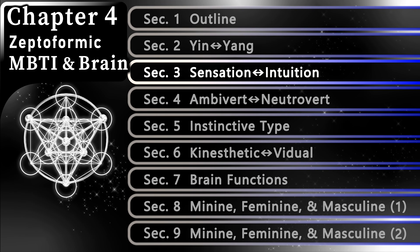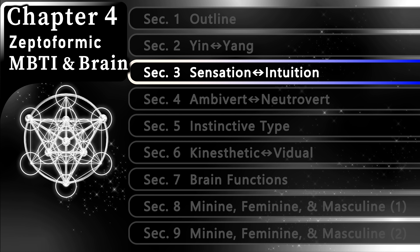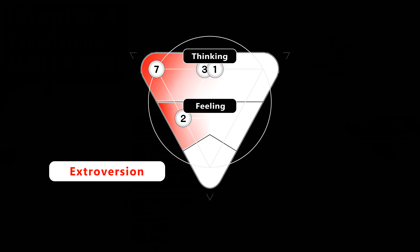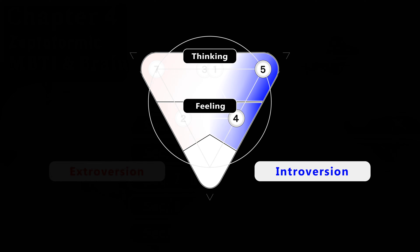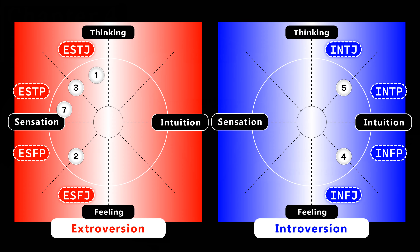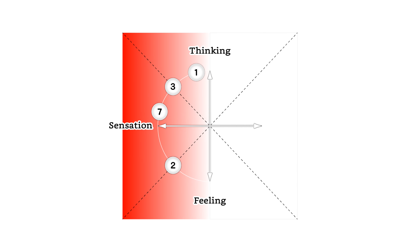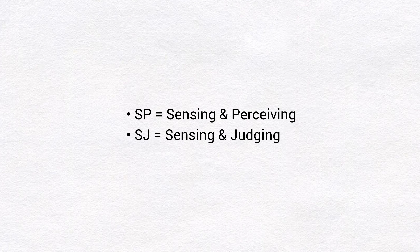Chapter 4, Section 3: Sensation and Intuition. Type 1, Type 3, Type 7, and Type 2 tend to be extroverted sensation types, and Type 5 and Type 4 tend to be introverted intuitive types. First, we discuss sensing types. Sensing types are divided into the following two major categories: the SP temperament and the SJ temperament. SP is sensing and perceiving, and SJ is sensing and judging. The difference between perceiving and judging can be described in the following way: sensation and intuition are considered to be perceiving functions, while thinking and feeling are considered to be judging functions.